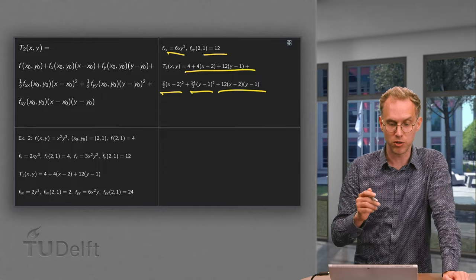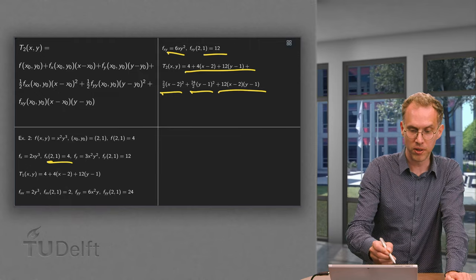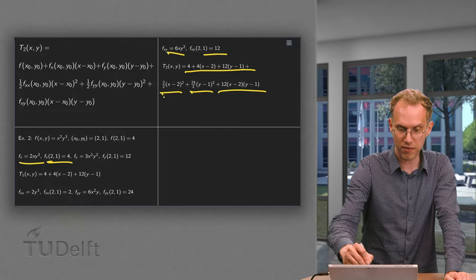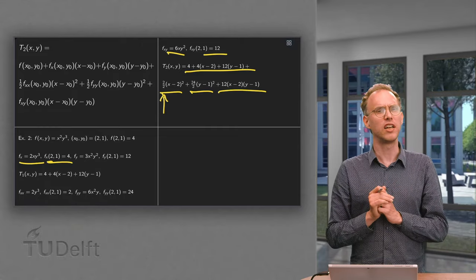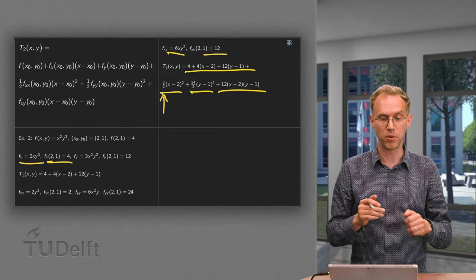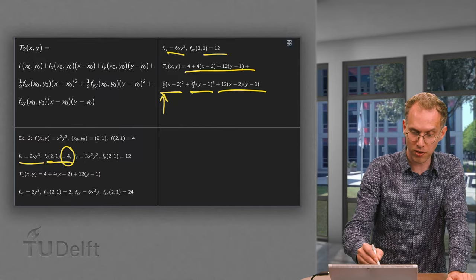What sometimes goes wrong is that people forget to substitute the point (2,1) and leave just the fx here, and put all kinds of fx's over there. That's a really horrible mistake, because then you don't get a polynomial necessarily. Then it becomes a mess. So do not forget to substitute the point to get those coefficients. Those coefficients are just numbers.